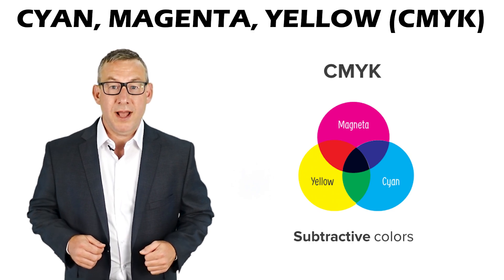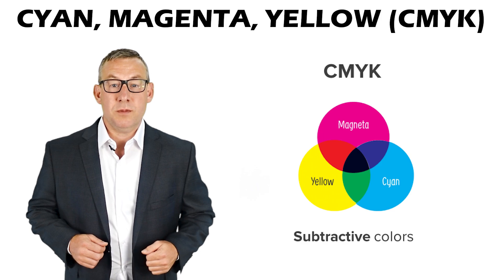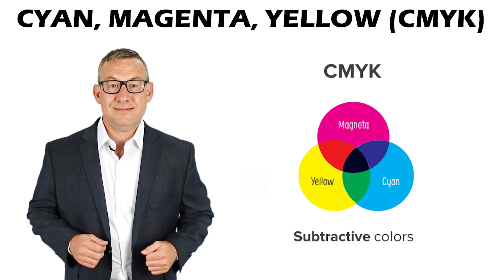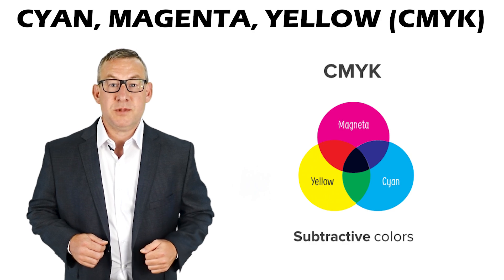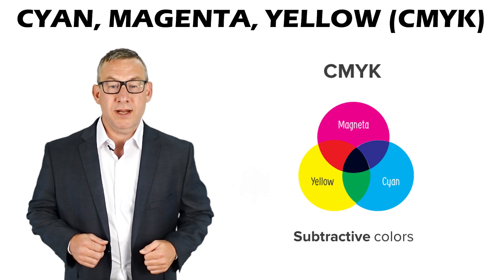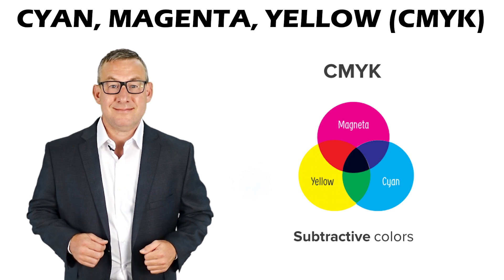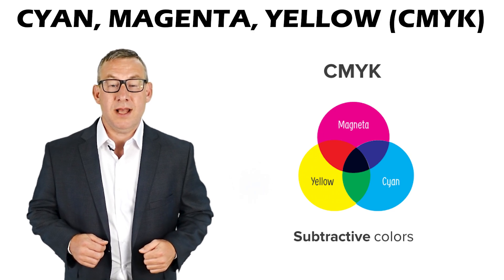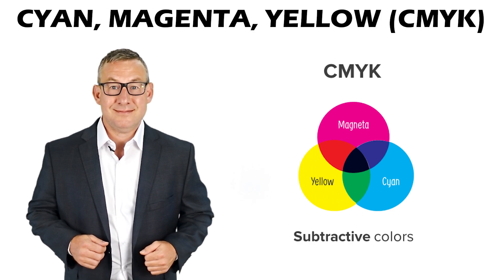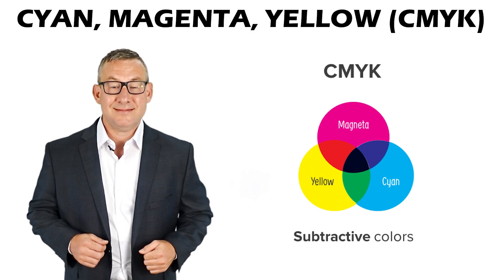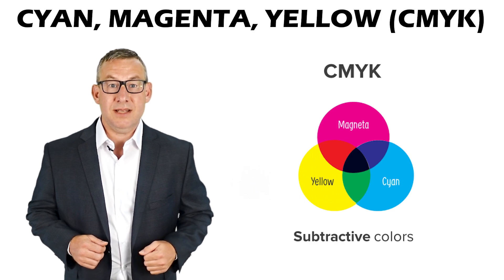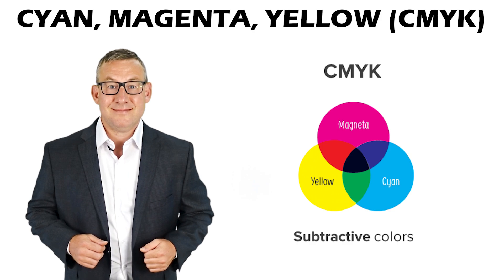Cyan absorbs red, reflecting green and blue. Magenta absorbs green, reflecting red and blue. Yellow absorbs blue, reflecting green and red. Cyan and magenta absorb red and green to leave blue. Cyan and yellow absorb red and blue, leaving green. Yellow and magenta absorb blue and green, leaving red. The subtractive color system is how color is printed on paper.